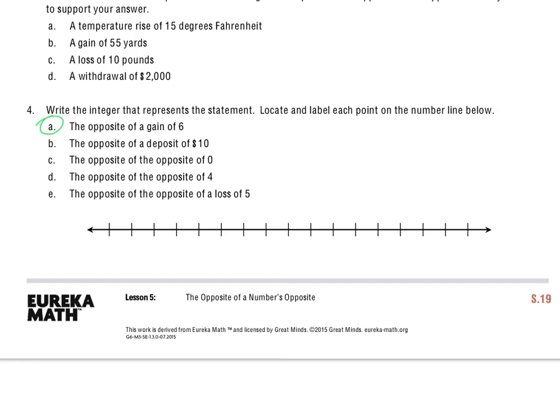And it says the opposite of a gain of 6. So a gain of 6 in itself is going to be a positive 6, because I know that's an increase of 6, so it's a positive integer.